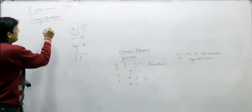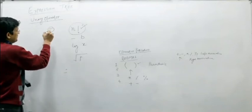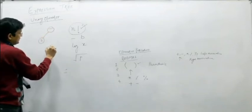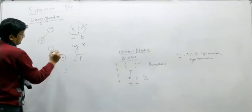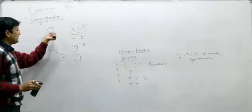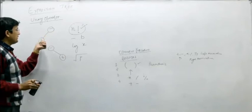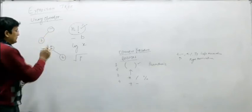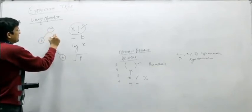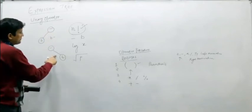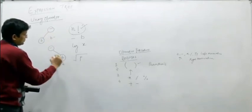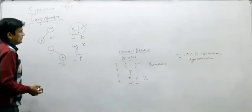Now let us build the expression tree for minus B. Two types of expression trees are possible, with the operator at the internal node and the operand as a leaf. The in-order traversal of one tree gives B minus, and of the other gives minus B. Since minus B matches the original expression, that tree is the correct one.